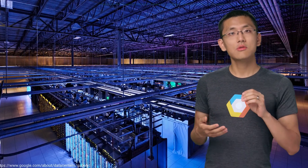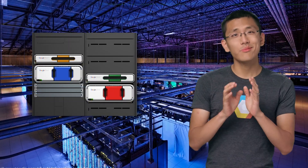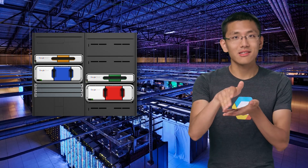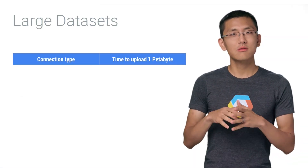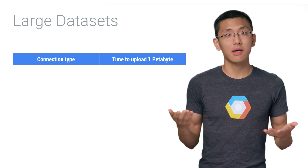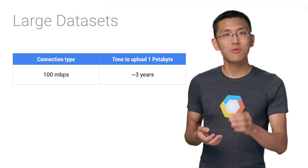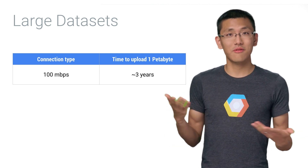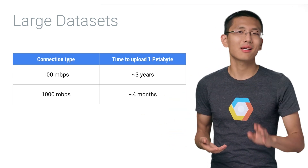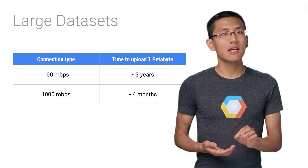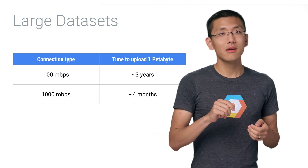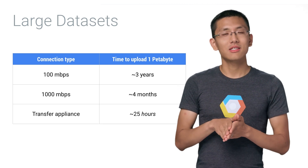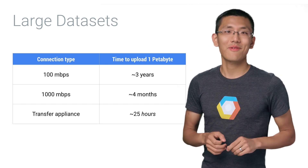But if your data is too big to send over the network, you can use the Google Transfer Appliance, which is literally a machine that will be shipped to your data center to securely capture and transfer a whole petabyte of data. With a typical network bandwidth of 100 megabits per second, it would take three years to upload a petabyte over the network. Even with a gigabit connection, it would still take four months. The transfer appliance, on the other hand, can capture a petabyte of data in just 25 hours — that's crazy fast.